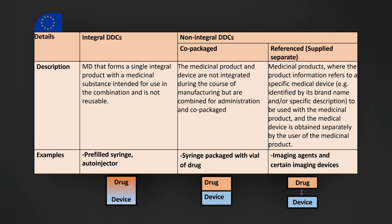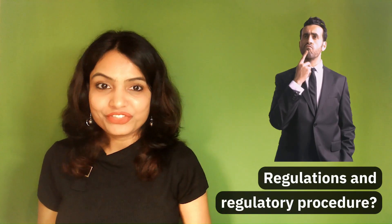In the EU the terminology is different, but the products fall into similar categories. EU products are classified into two main categories: integral and non-integral. Integral means the drug and device are combined into a single product — equivalent to single entity in the US. Non-integral means they are not combined, and under this there are two sub-categories: co-packaged, which is the same as in the US, and reference products, which are like cross-labeled products in the US. You can correlate each EU term with its US equivalent.